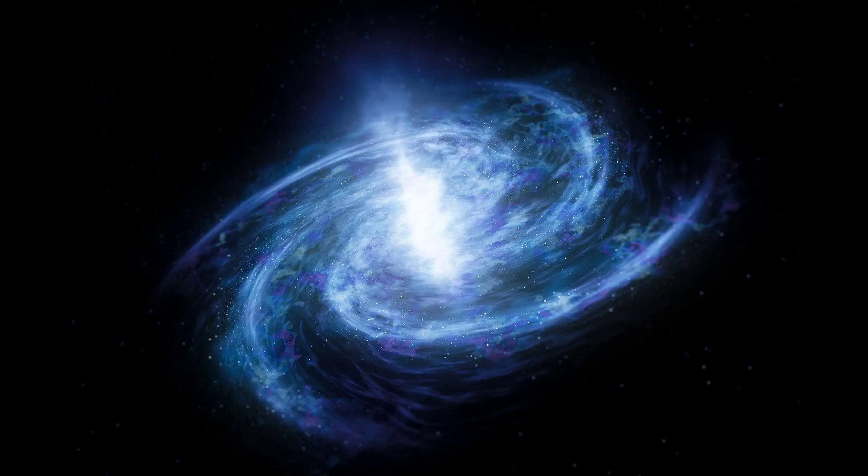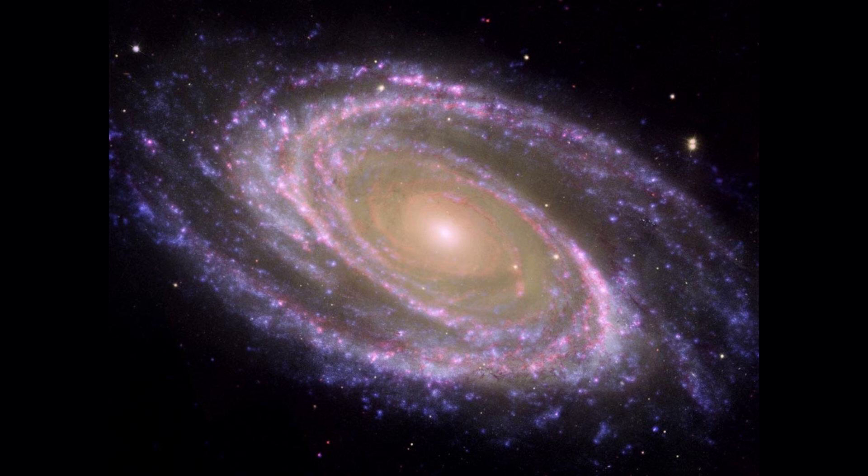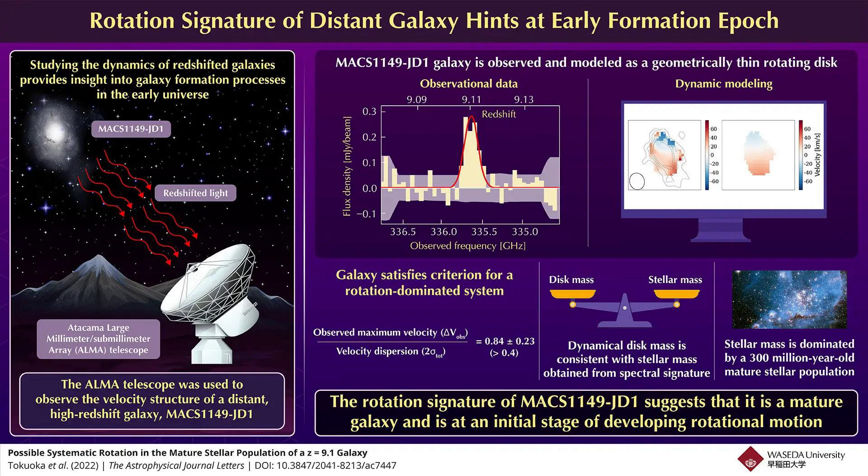One of the key factors influencing the structure of a galaxy is its rotation. Just like the Earth spins on its axis, galaxies also rotate. This rotation affects the shape of the galaxy, with some galaxies exhibiting a flat, disc-like structure, while others appear more spherical. The rotation also plays a crucial role in determining the distribution of stars and gas within the galaxy.